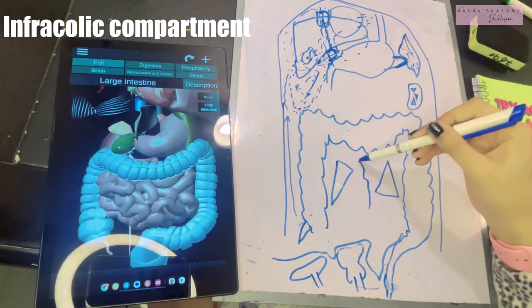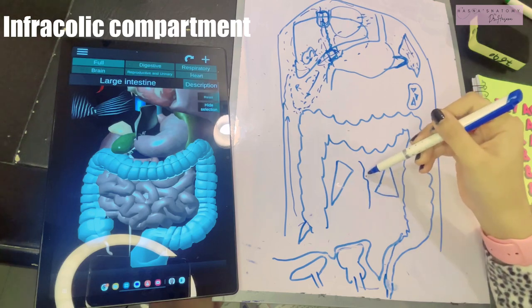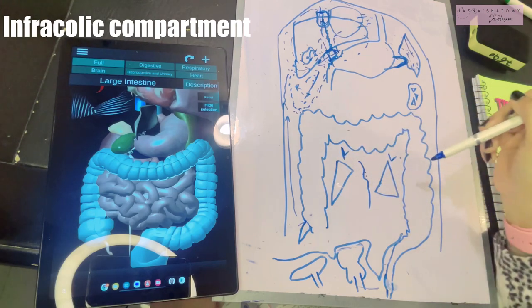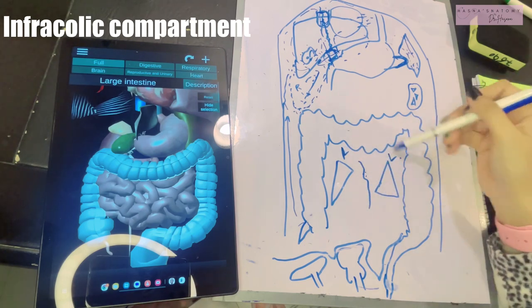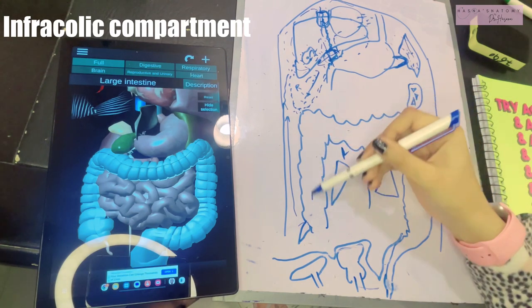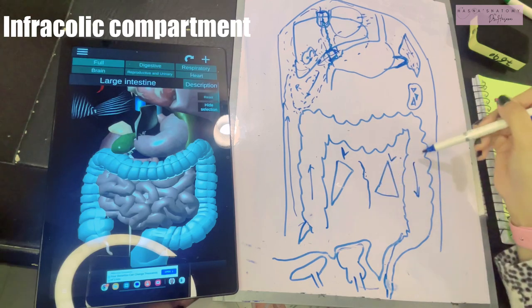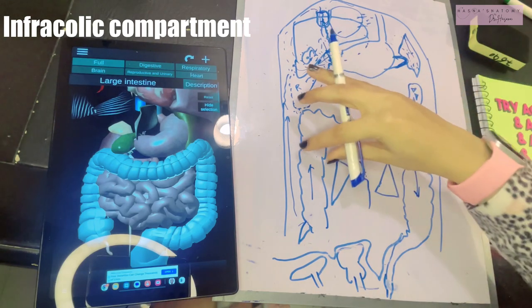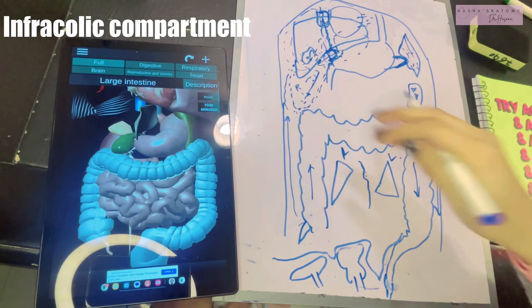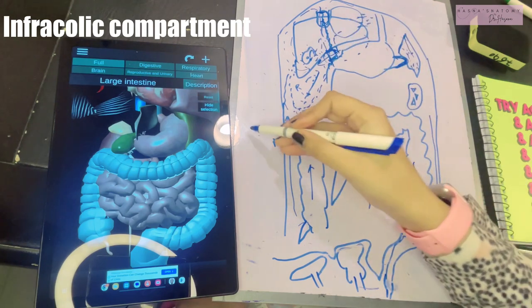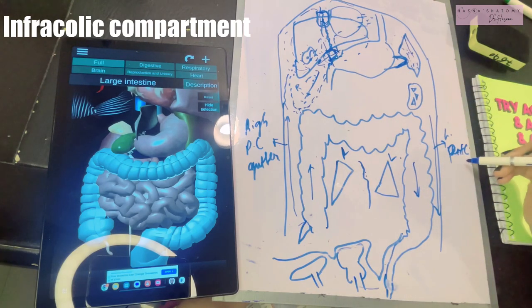Now let's discuss the infracolic compartment, which is simpler than the supracolic. The mesentery proper divides the infracolic compartment into a right and a left part — the right and left infracolic compartments. The right infracolic compartment lies between the ascending colon and the mesentery, whereas the left lies between the descending colon and the mesentery.